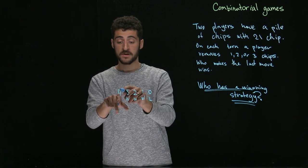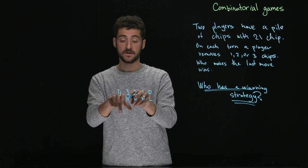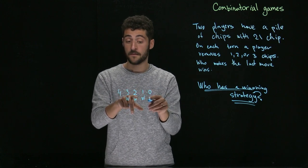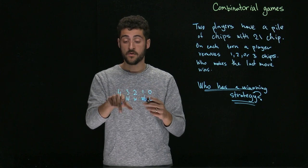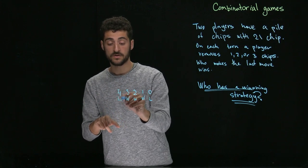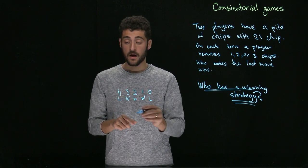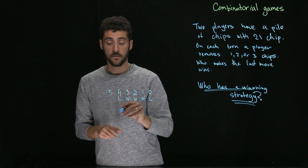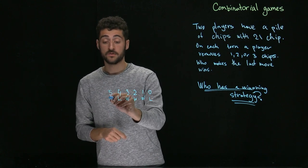For four it doesn't matter what kind of move the player makes, it goes to three, two or one. Therefore the player who makes the move starting from four loses. With five we can always go to four so it's a winning position.